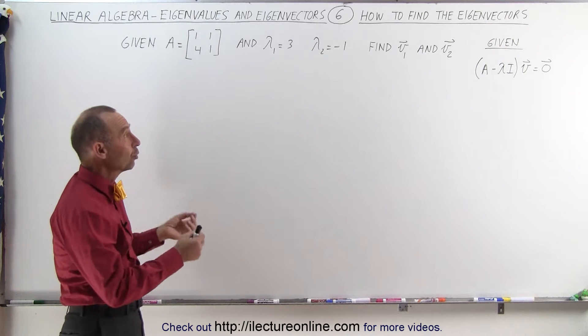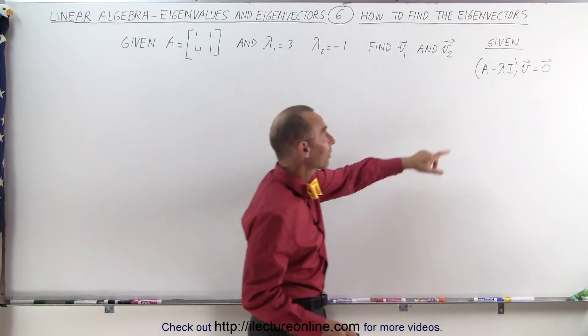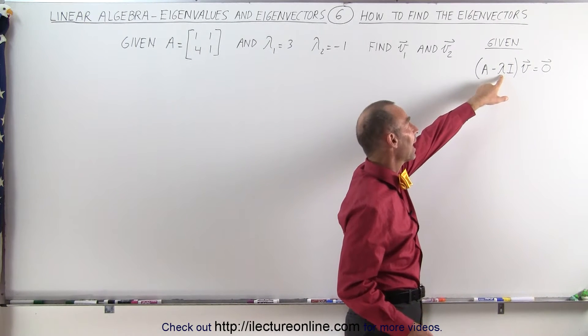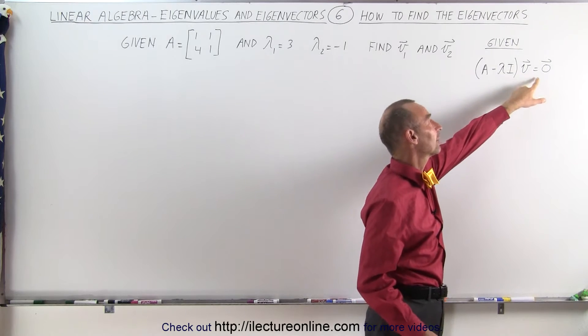We're then supposed to find the two associated eigenvectors, v1 and v2, given that the matrix minus the eigenvalue times the identity matrix multiplied times the vector should give us the null vector.